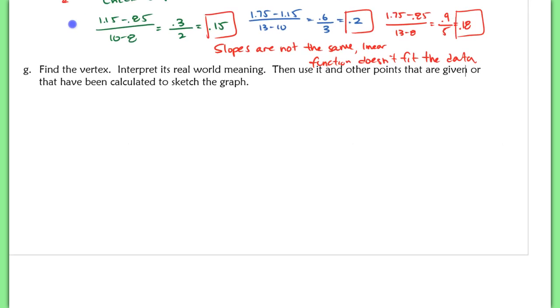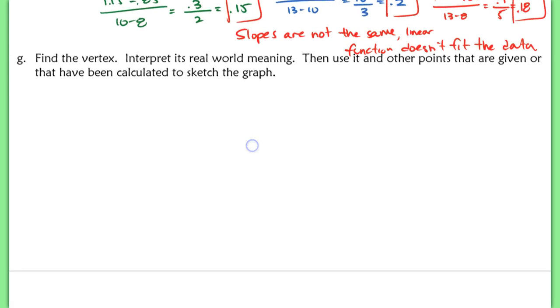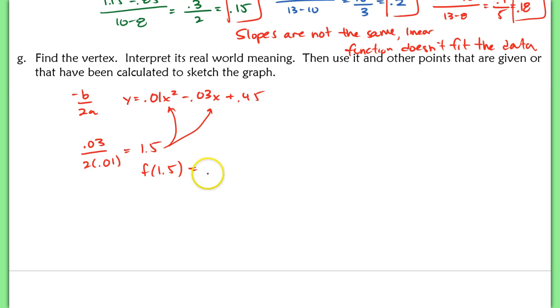The last question here says to find the vertex and interpret its real-world meaning. And then we'll use that and all the other points to graph a sketch of this. So finding our vertex should be really easy. We can do this two different ways. We can take the opposite of b over 2a. So we can use our original quadratic here and use opposite of b, so 0.03, divided by 2 times 0.01. And we'll get 1.5, or 3 halves. And then we plug that value back in for the x here. So we'd find f of 1.5 to find our y value. And our y value here would end up being 0.4275.